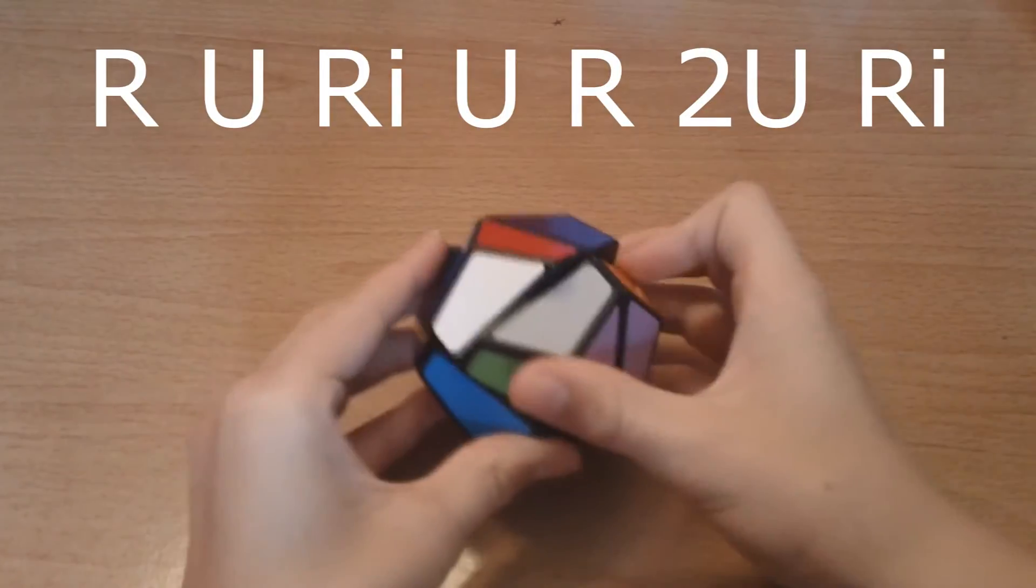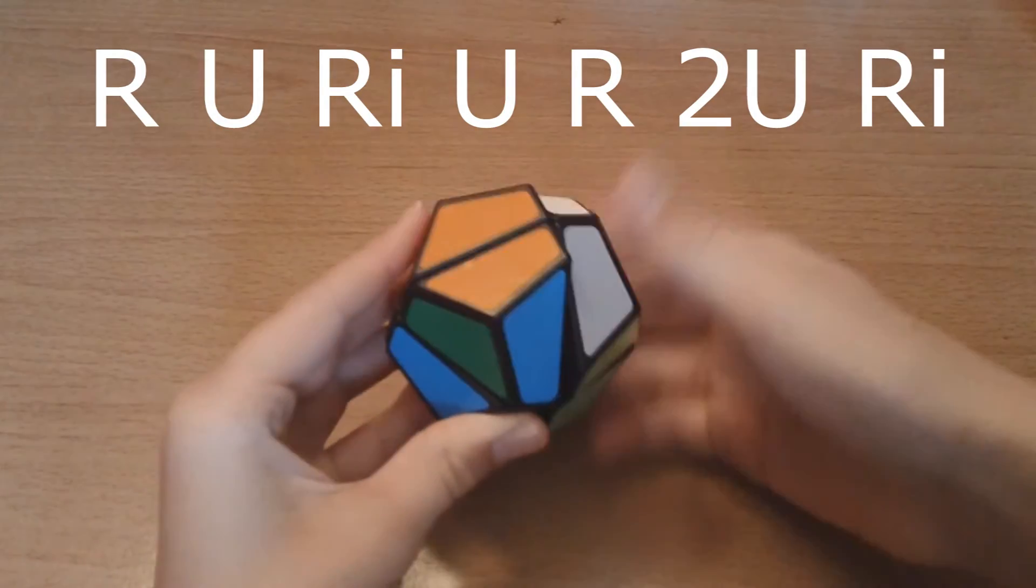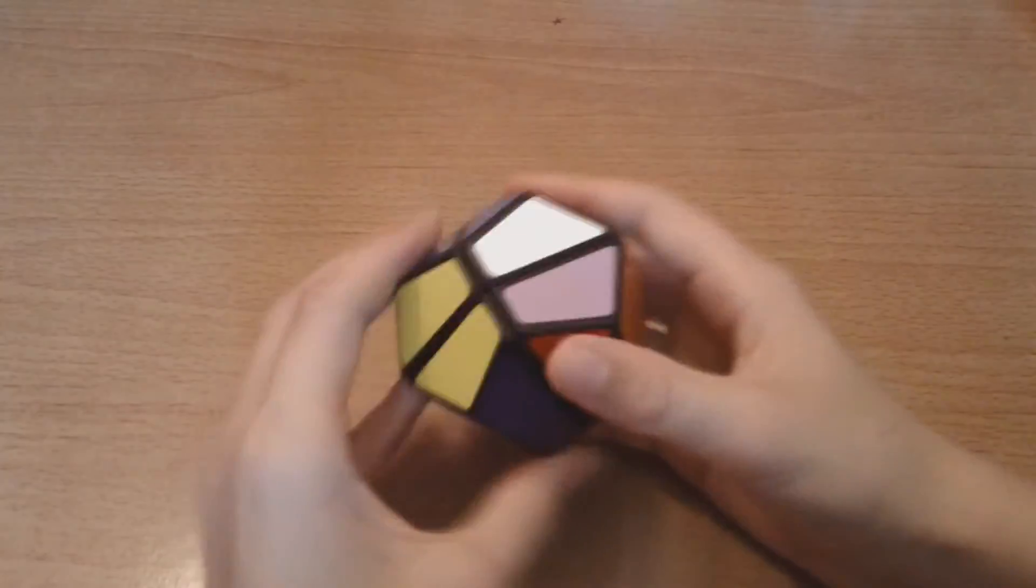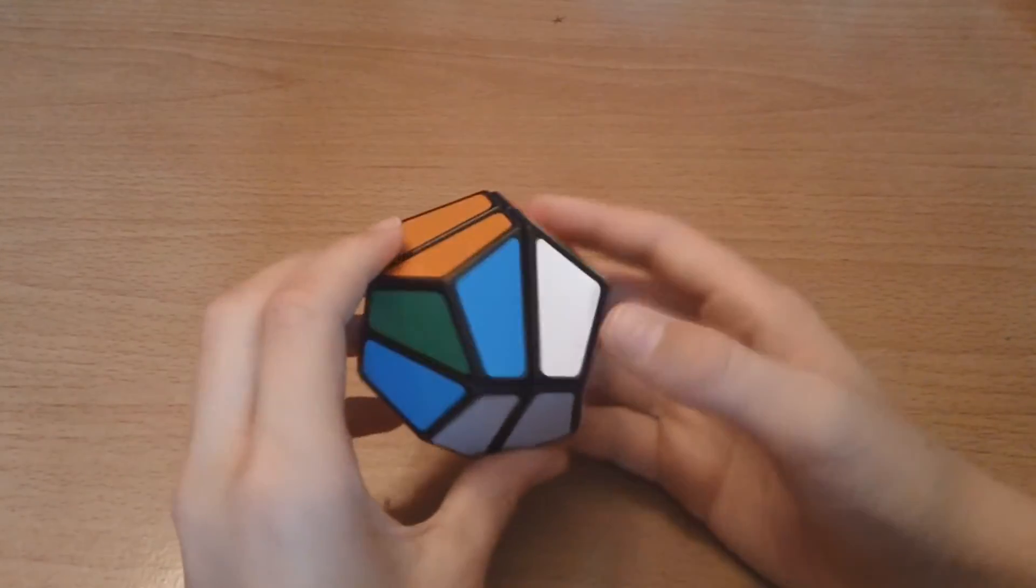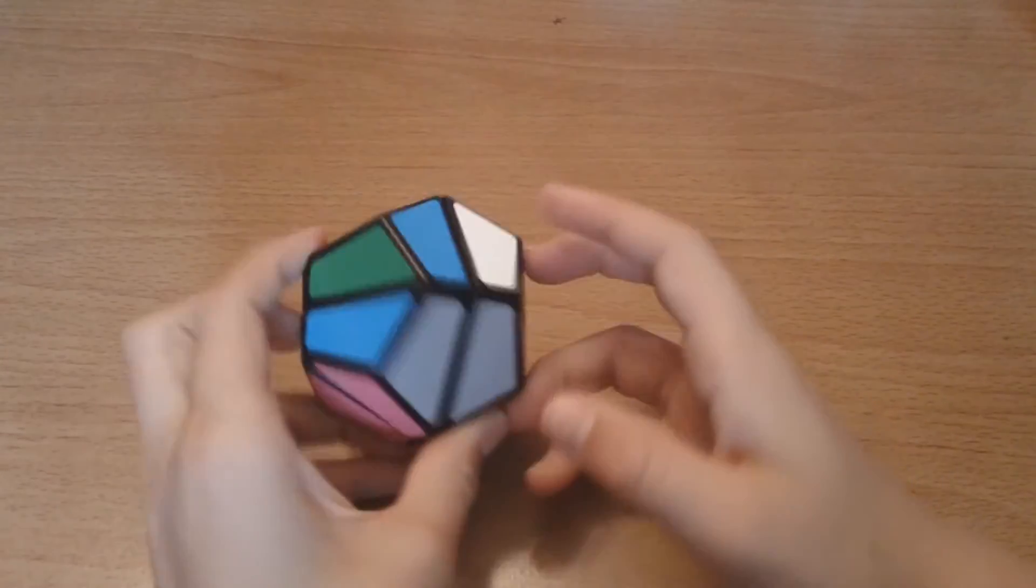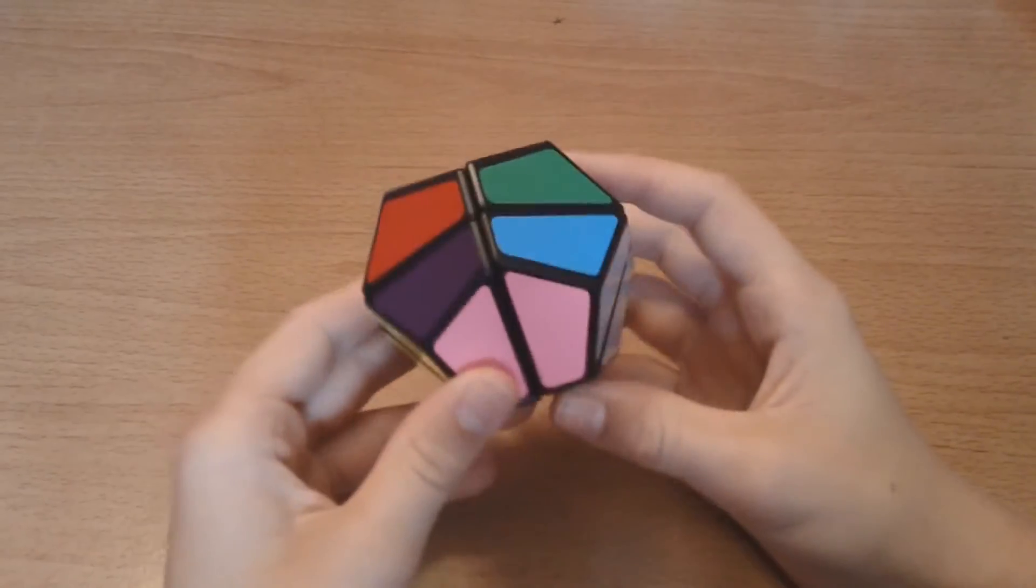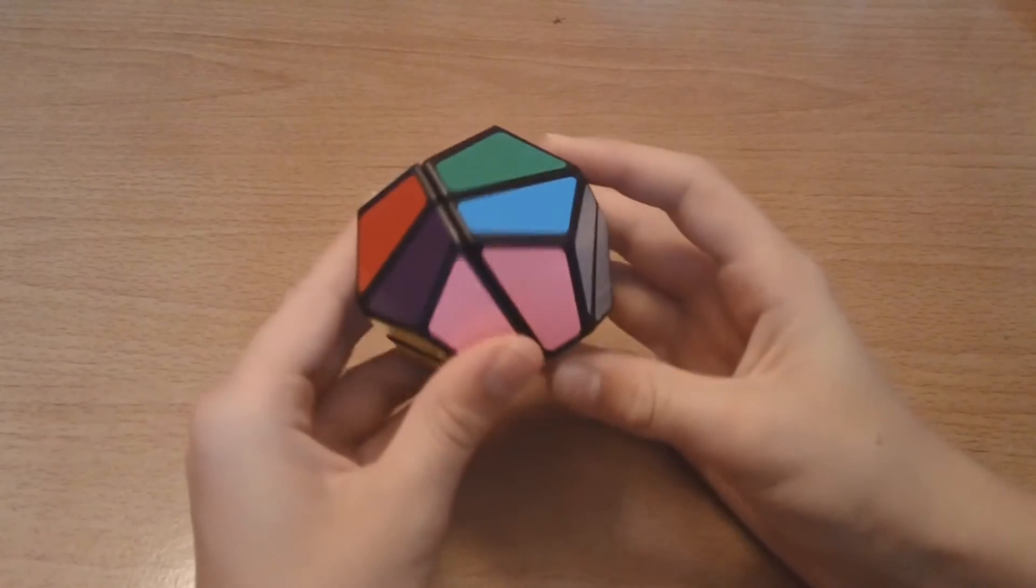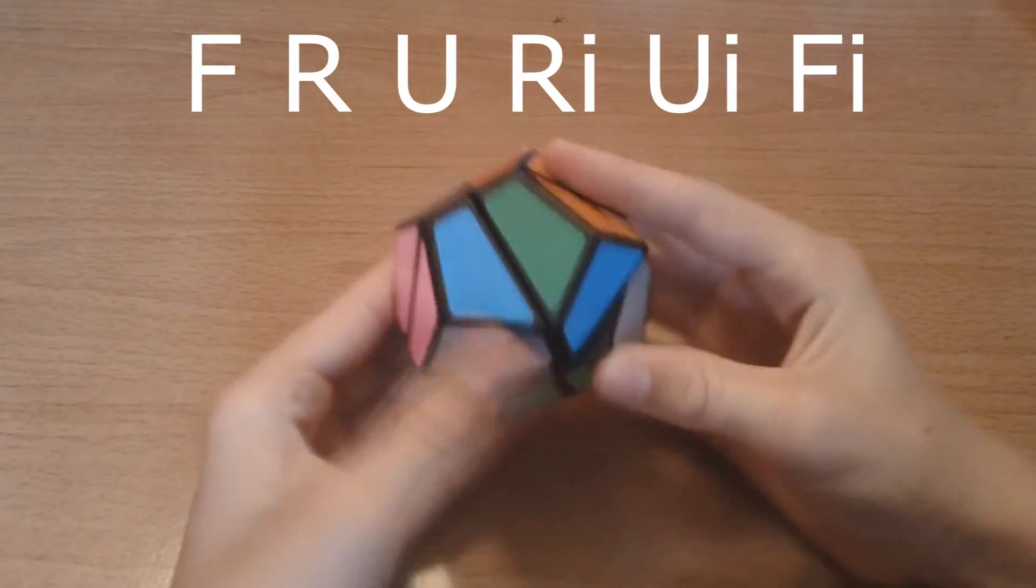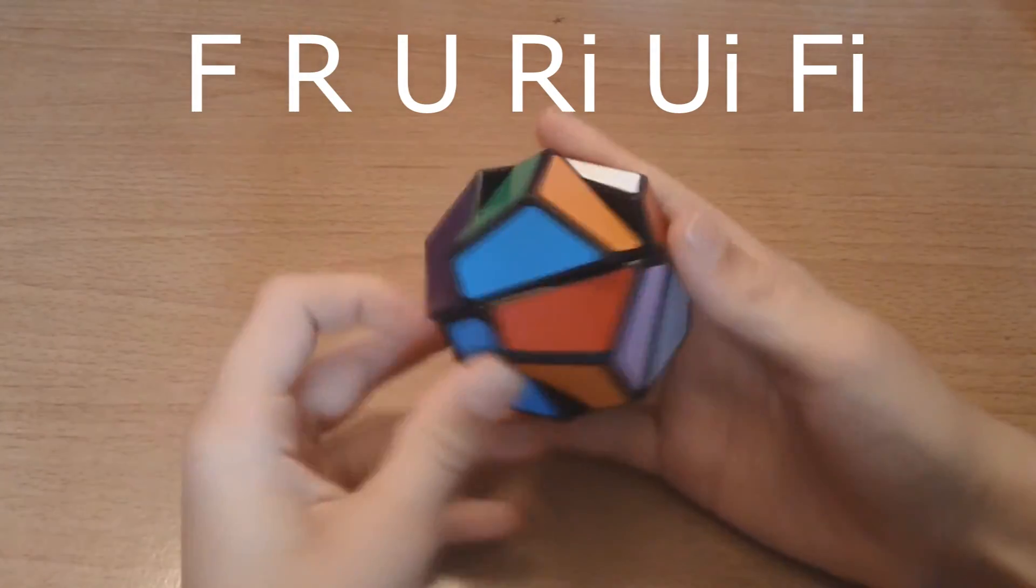And this algorithm is R-U-R-I-U-R-2-U-R-I. And then we have to place another piece which one is already in place. This one is on violets. This one is in place and this one is diagonal. So, if that didn't work, then we're going to do a different algorithm. And it's also going to be a beginner's method and a megaminx algorithm. And that is going to be F-R-U-R-I-U-I-F-I.